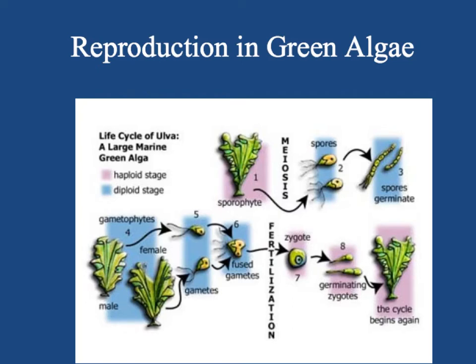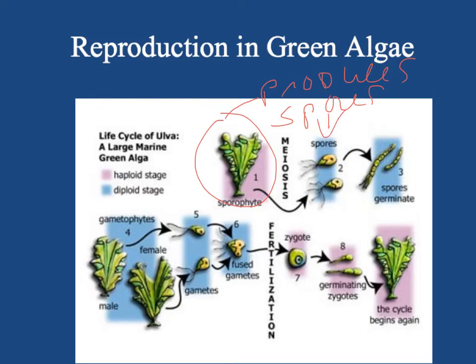The sporophyte is the algal form that produces spores — the sporophyte produces spores. The gametophytes produce gametes. Spores are reproductive cells that do not require fertilization to produce a new adult, so each of these will make adults without the interaction with any other cells. However, the gametes produced by these gametophytes have to fuse in fertilization in order to produce a zygote, which is a developing new adult.